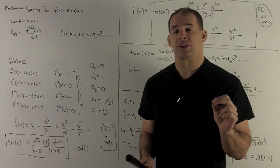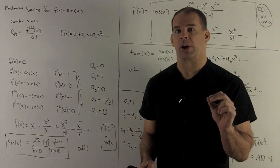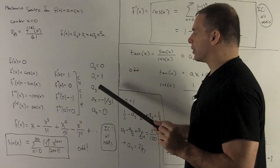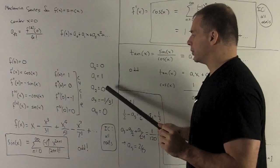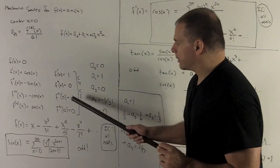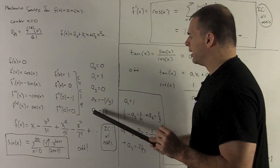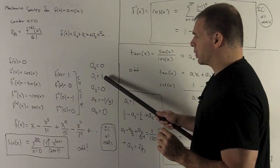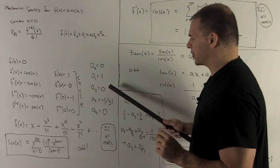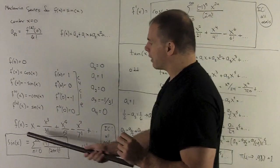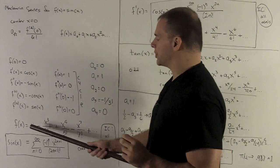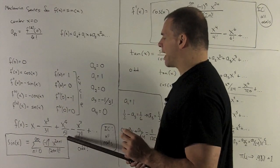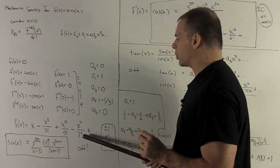To get our aₖ's, all I need to do is divide by k factorial. Going through the first few: a0 is 0, a1 is 1, a2 is 0, a3 is minus 1 divided by 3 factorial, a4 is 0, and a5 is 1 divided by 5 factorial, and so on. So the first few terms of our Maclaurin series are x minus x cubed over 3 factorial, plus x to the 5th over 5 factorial, minus x to the 7th over 7 factorial.